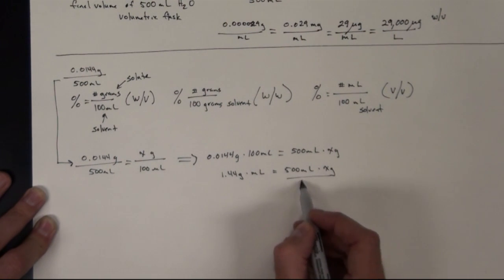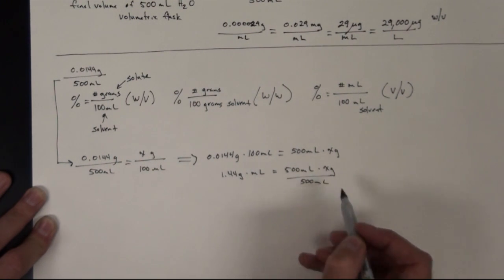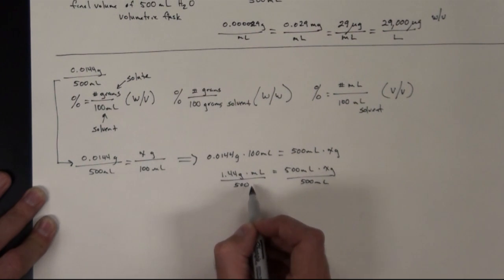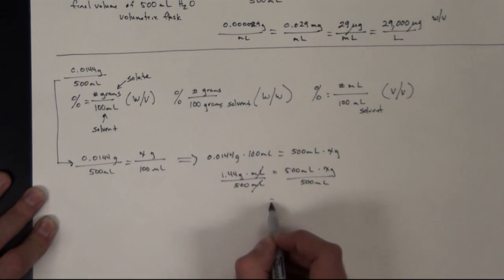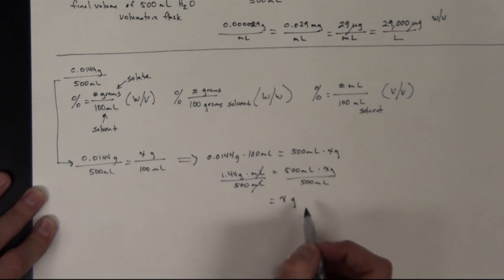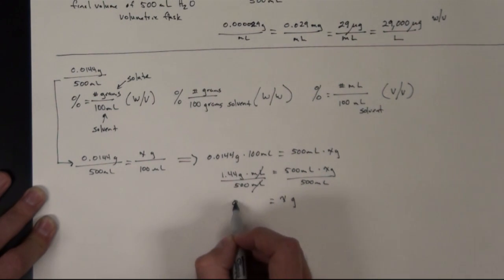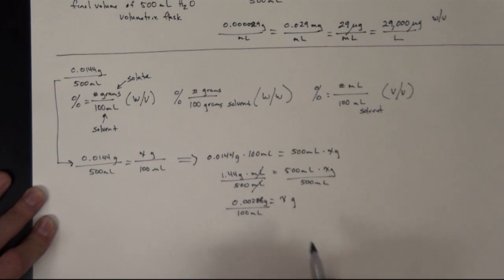so divide both sides by 500 milliliters. Our milliliters will cross off and we'll be left with this divided by that. So our number of grams is actually going to, in this case, equal